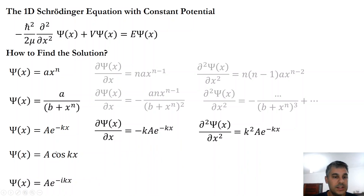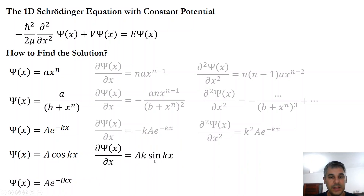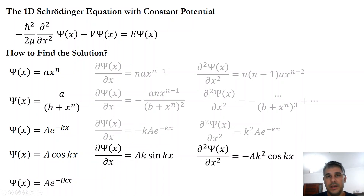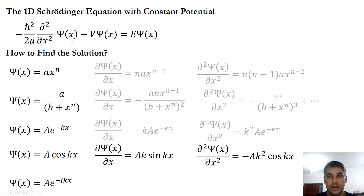Let's check the cosine function. The first derivative is a times k times sine of kx, and the second derivative is minus a times k squared times cosine of kx. This actually works — if you replace it in the Schrödinger equation it will be a solution. You can test it and we will return to this solution later.